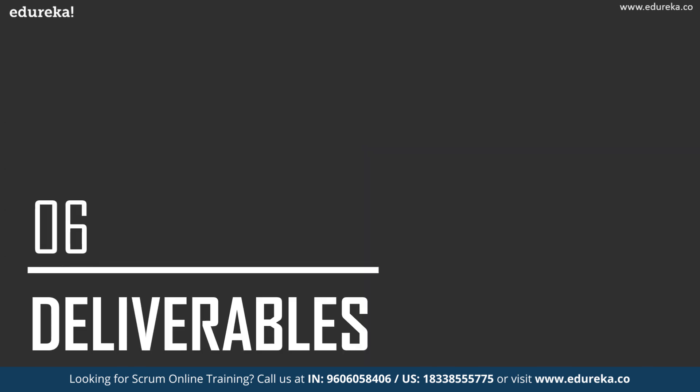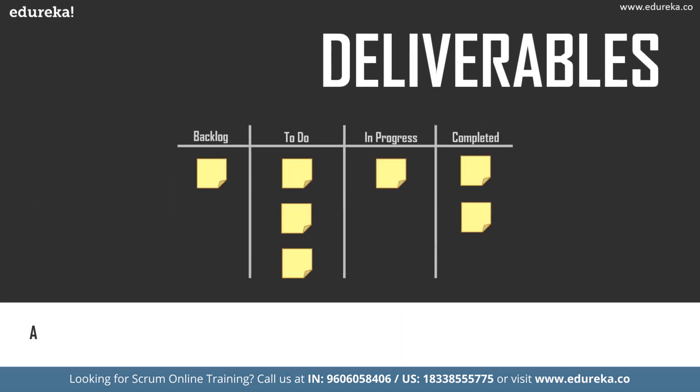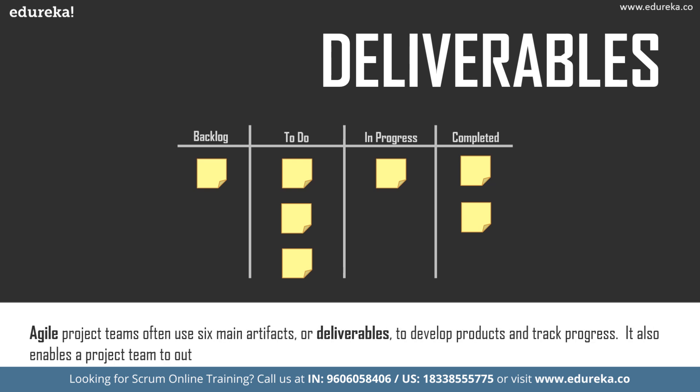Now let's talk about deliverables. Agile project teams typically use six main artifacts or deliverables to develop products and track progress, also enabling a general timeframe for when requirements will be developed and released. Created during the sprint planning meeting, the sprint goal is the aim for the sprint. It can be met through implementation of product backlogs, provides guidance to the development team on why the increment is built, and gives the sprint flexibility regarding the functionality implemented.